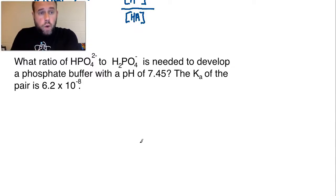So, here's the problem. What ratio of HPO4 2- to H2PO4- is needed to develop a phosphate buffer with a pH of 7.45? The Ka of the pair is 6.2 times 10 to the minus 8th. So, those are the pieces of information you have to solve this puzzle. What I want you to do is first, as you approach this problem, look at the two different components here, the two different chemical species. Which one would you call the conjugate base, and which one would be the weak acid?